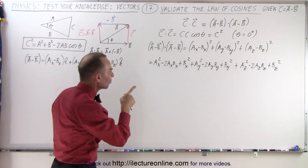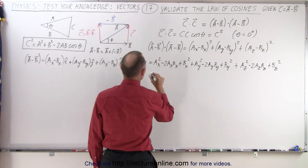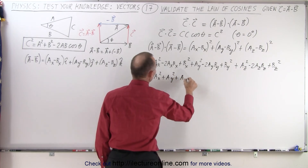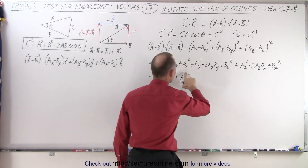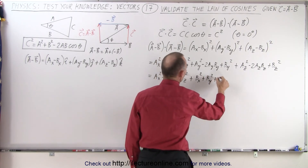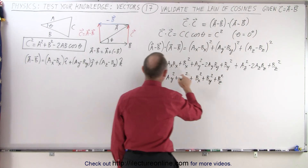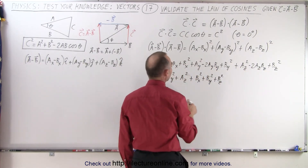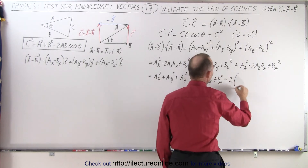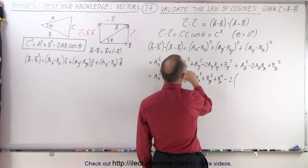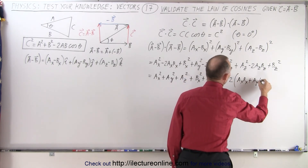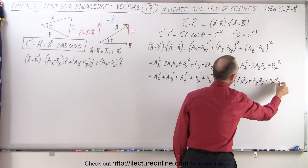Let me rewrite this to make it clearer. This can be written as A sub X squared plus A sub Y squared plus A sub Z squared, plus B sub X squared plus B sub Y squared plus B sub Z squared, minus 2 times — factoring out the minus 2 — times A sub X B sub X plus A sub Y B sub Y plus A sub Z B sub Z.